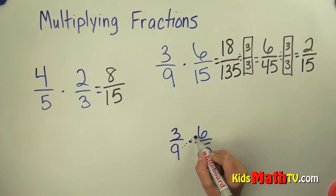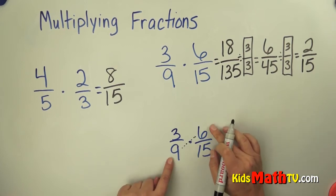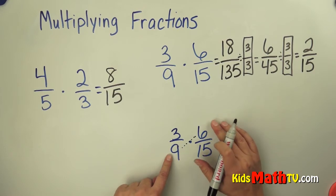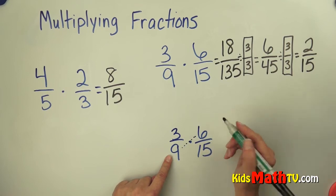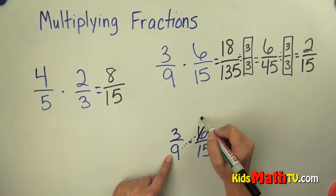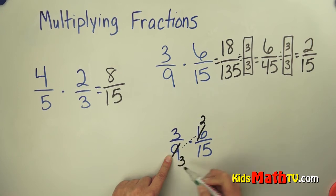So we can look at numbers that are crossed from each other. Is there a number that will divide 6 and 9? There is. 3 will divide 6 and 9. So I am going to divide both of these numbers by 3. 6 divided by 3 is 2, 9 divided by 3 is 3.